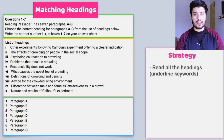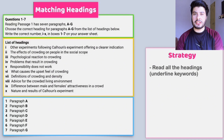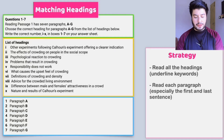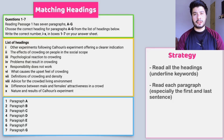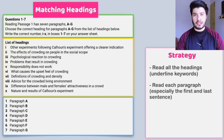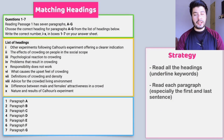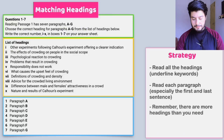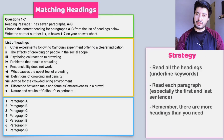Here are the strategies for IELTS Match the Headings. First, read all the headings and underline the keywords. Match those keywords with synonyms you've already underlined in the paragraphs to find your answer. Second, read each paragraph — especially the first and last sentence — because writers often place key information at the beginning or end of a paragraph to make their meaning clear.